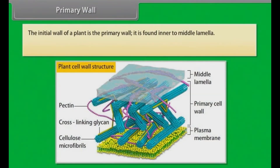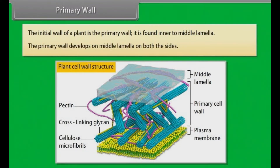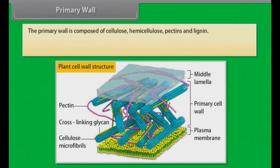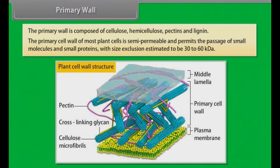Primary wall. The initial wall of a plant is the primary wall; it is found inner to the middle lamella. The primary wall develops on the middle lamella on both sides. The primary wall is composed of cellulose, hemicellulose, pectins, and lignin. The primary cell wall of most plant cells is semi-permeable and permits the passage of small molecules and small proteins, with size exclusion estimated to be 30 to 60 kDa, or 30,000 to 60,000 atomic mass units.